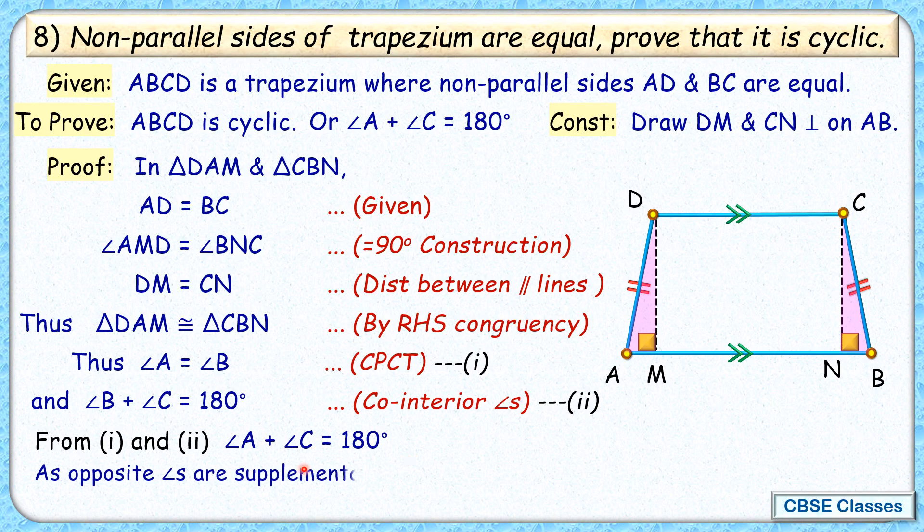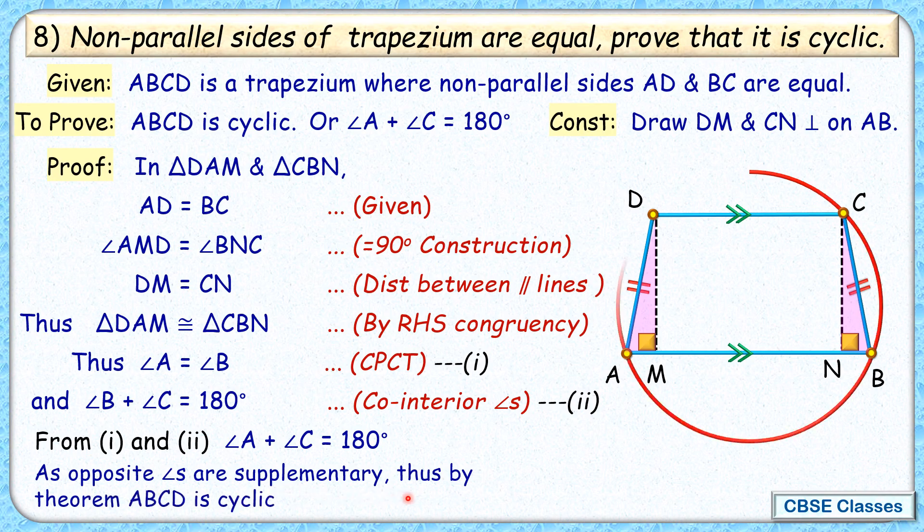And thus, as opposite angles are supplementary, we can say that ABCD is a cyclic quadrilateral. And this is what we had to prove, hence proved.